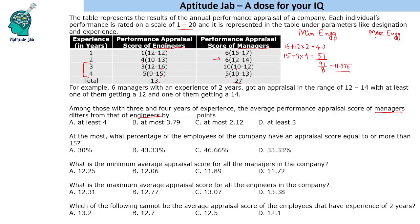Now for the maximum value for engineers: one person gets 12 (mandatory minimum), and the other two get 16 each. So 16 into 2 = 32, plus 12 = 44 for the 3-year group. For the 4-year experience, one person gets 9 (mandatory minimum), and the remaining people get the maximum appraisal of 15.